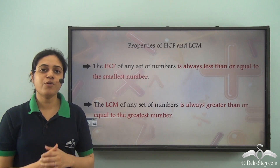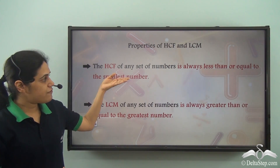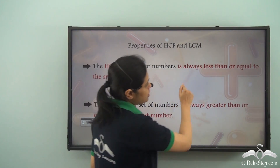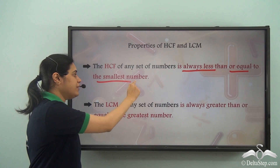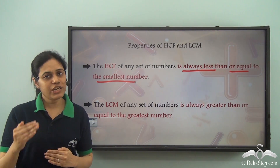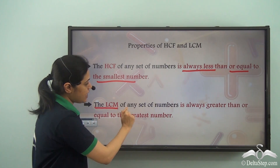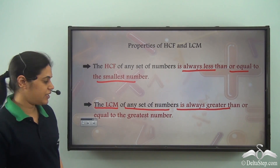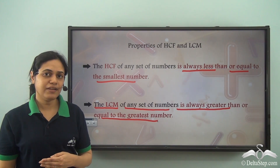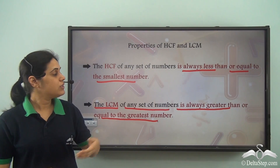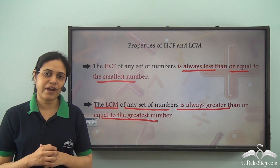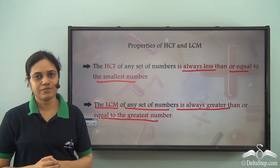Now, let us look at some other important properties of HCF and LCM. The HCF of any set of numbers — not just two, but three, four, five, any set — is always less than or equal to the smallest number. Also, the LCM of any set of numbers is always greater than or equal to the greatest number. So, the LCM will either be equal to or more than the greatest number for any set of numbers. These are important properties of HCF and LCM and you should always keep them in mind.